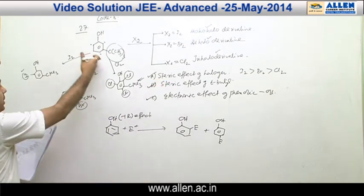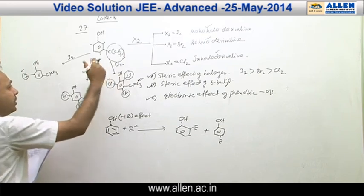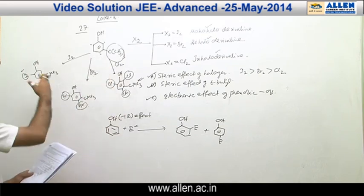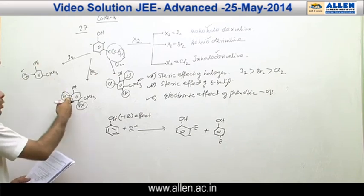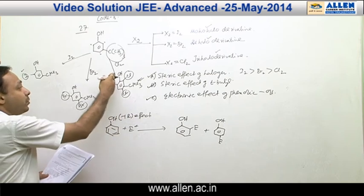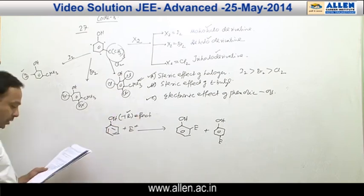And whether it is iodination, whether it is bromination, whether it is chlorination, in all cases, attacking electrophile attacks at ortho para positions with respect to OH group. And it is because of plus R effect of OH group.